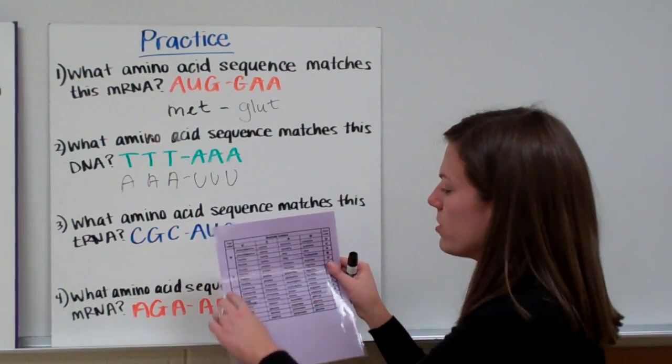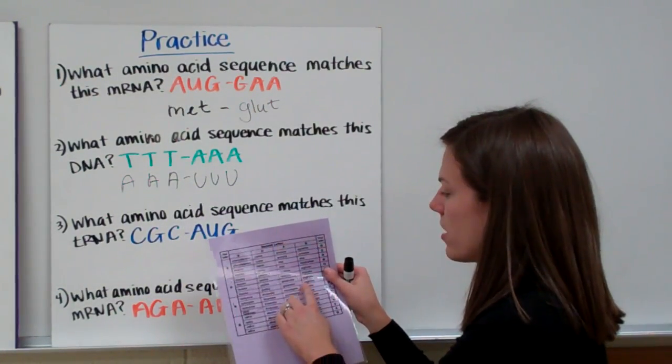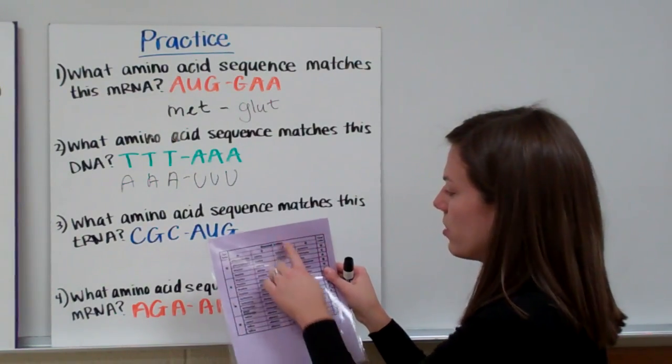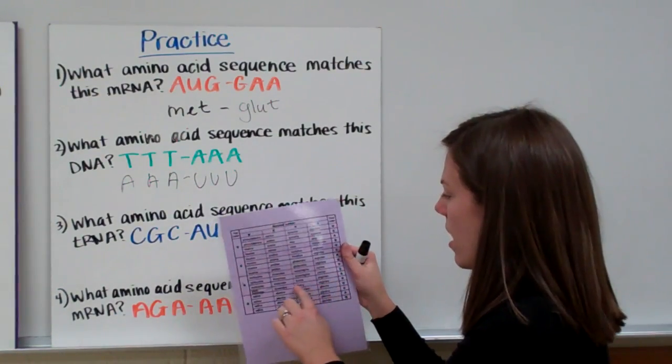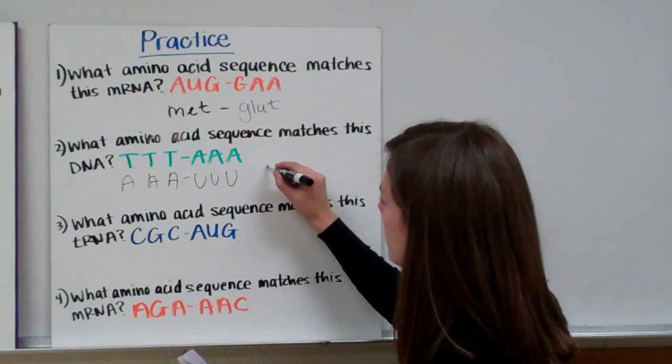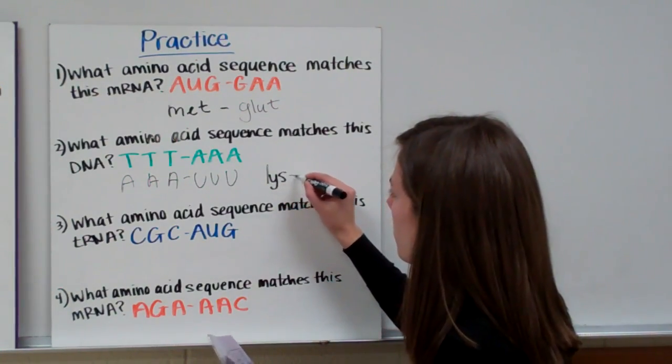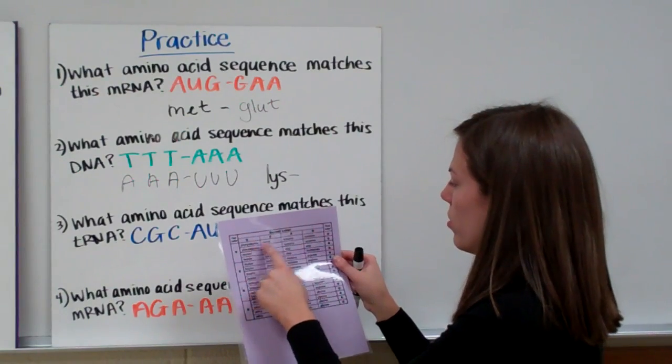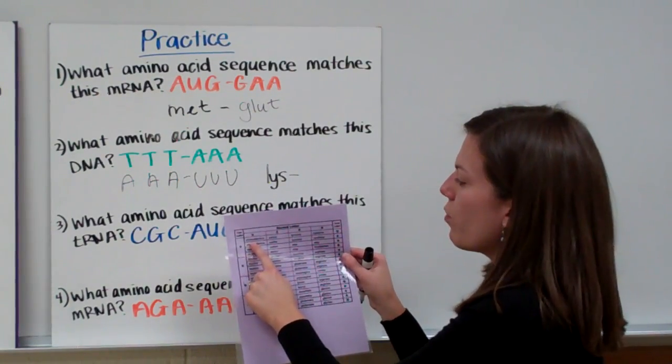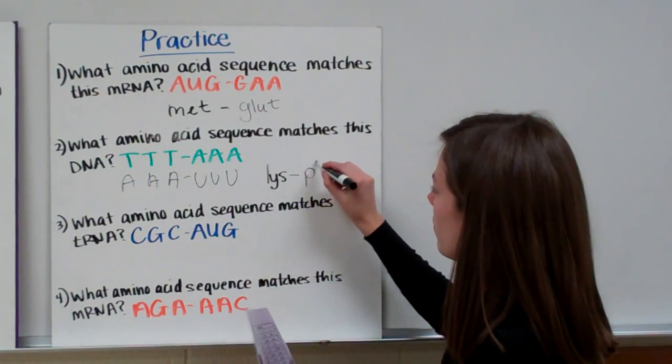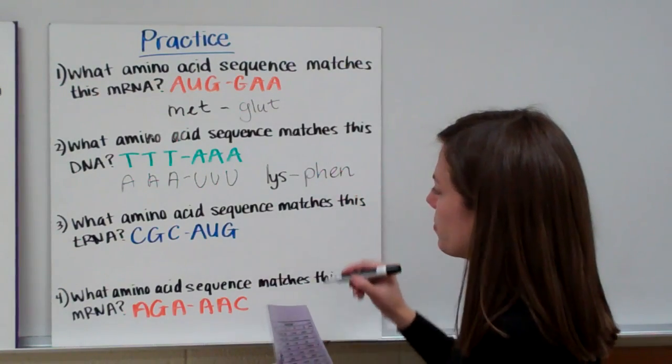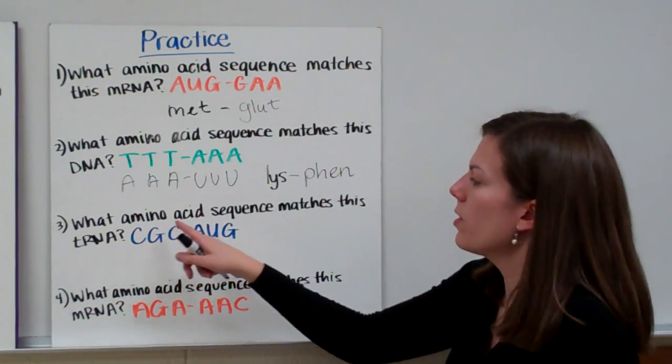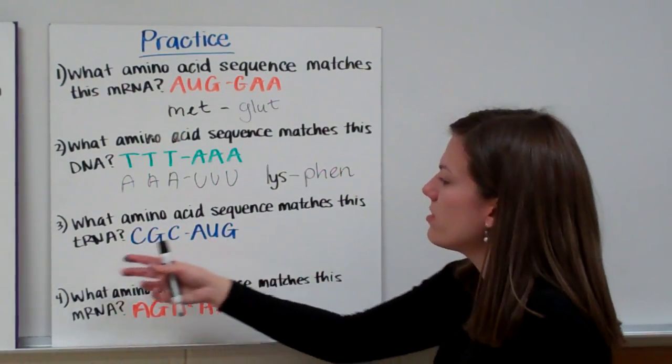Now you're going to look up on your codon chart those pairs of letters. So we have AAA. We start with A. Our second letter is A. So that means we're somewhere in this box. And our last letter is A. So that corresponds with lysine. And our next three are UUU. So we have U, U, and U. So those line up for phenylalanine.